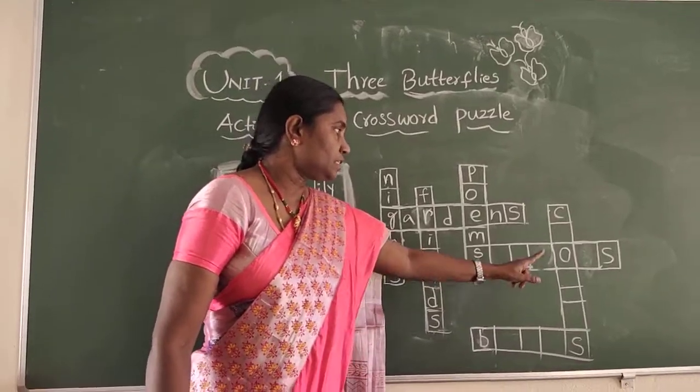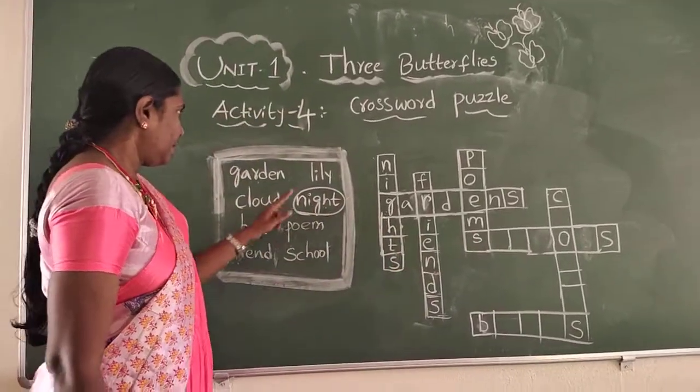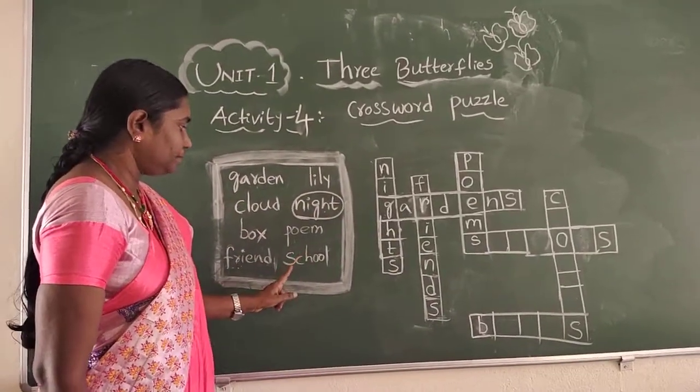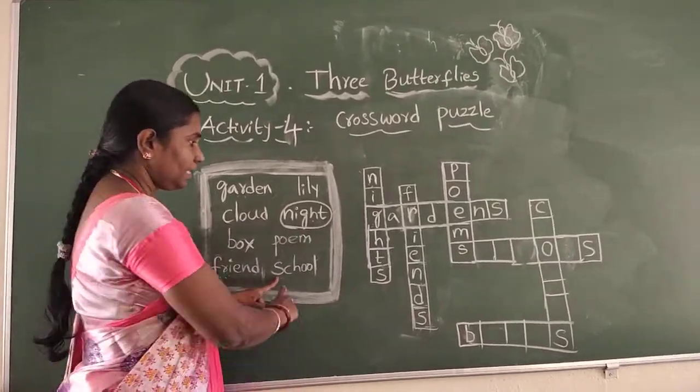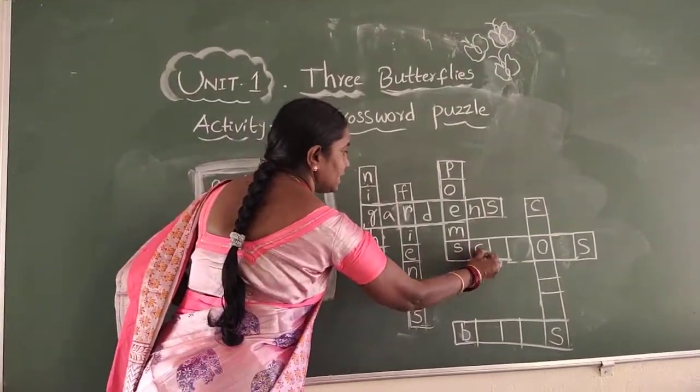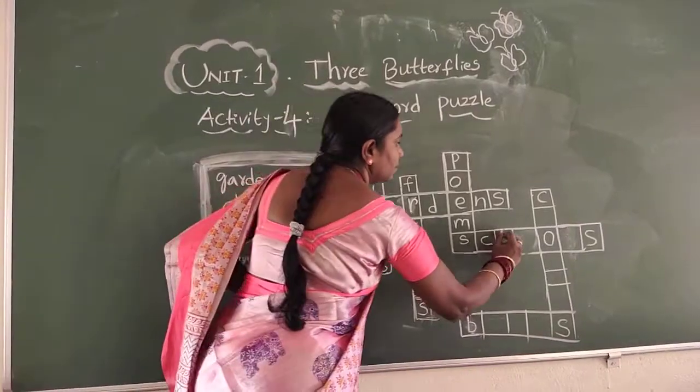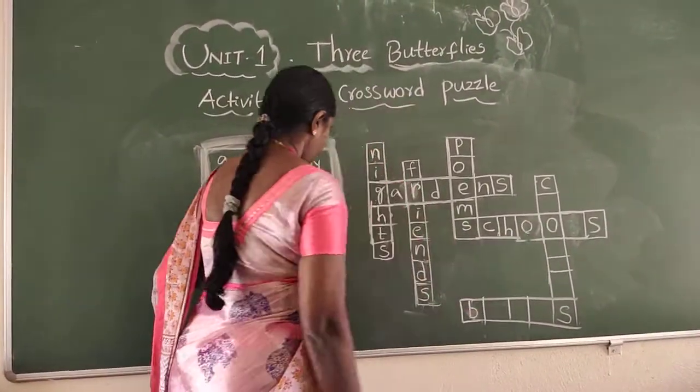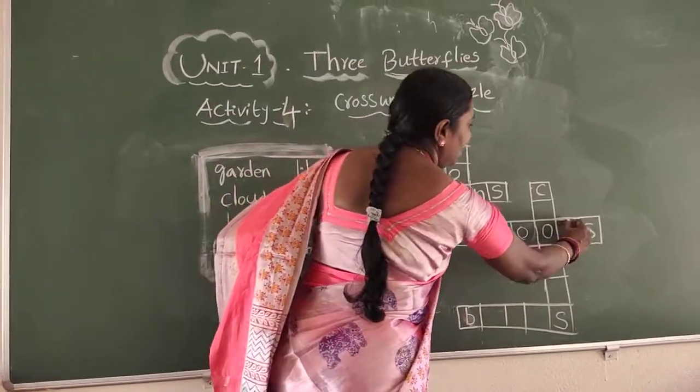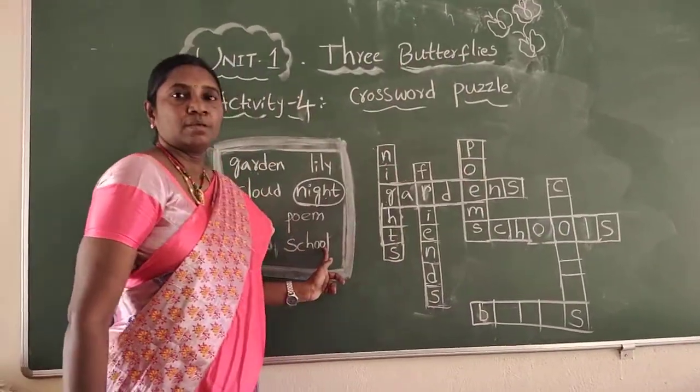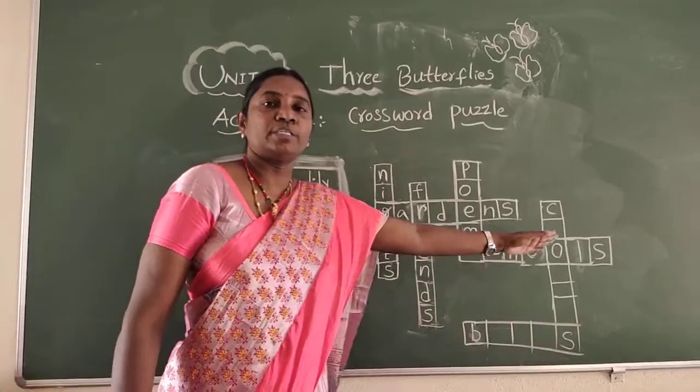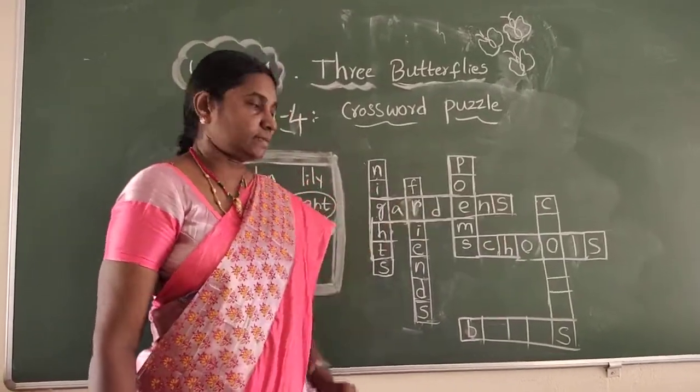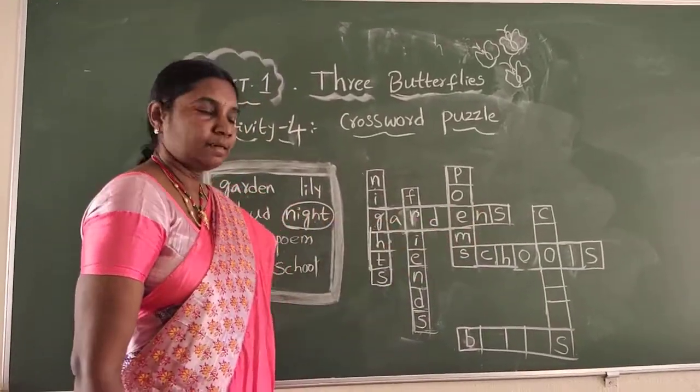And coming to this line, first letter is S. And where is the first letter word? Yes, here. S-C-H-O-O-L-S. Plural form is schools. School plural form schools. So we have completed that crossword.